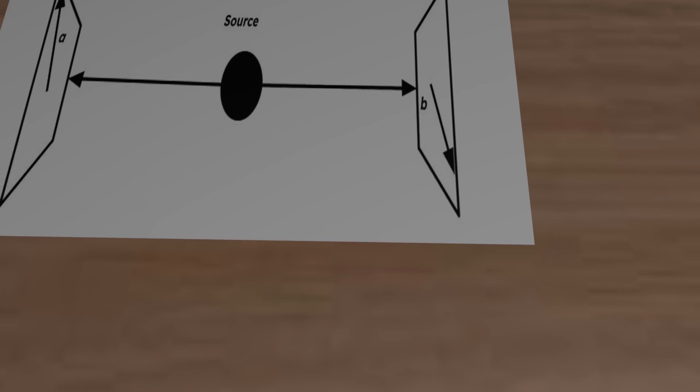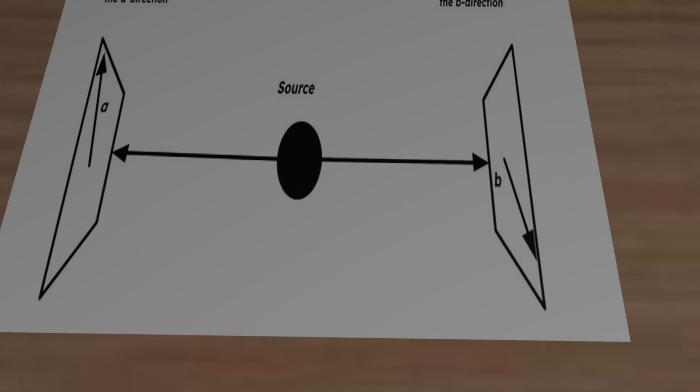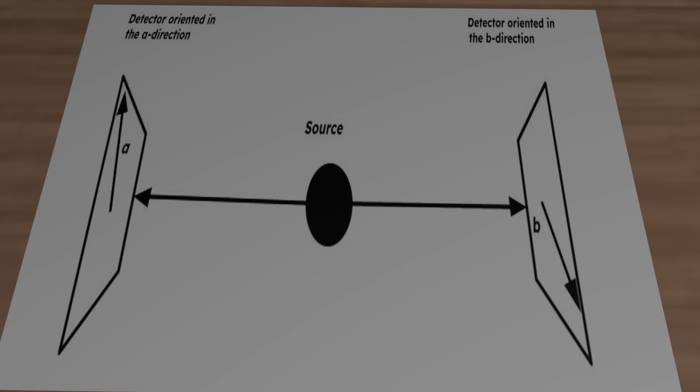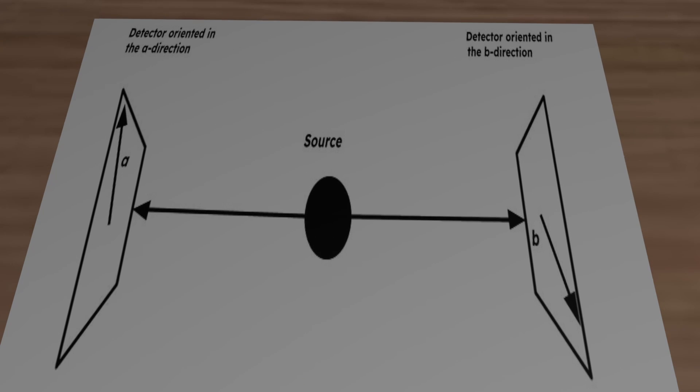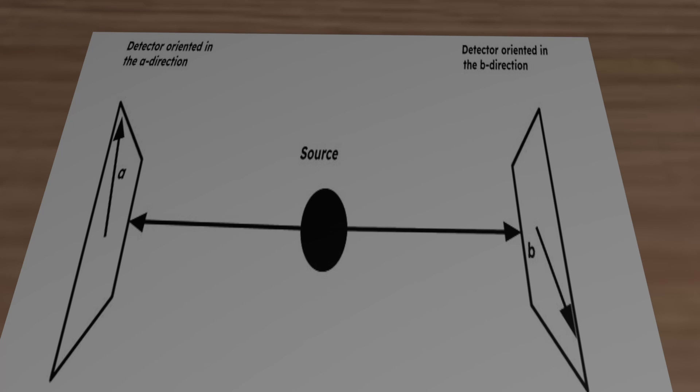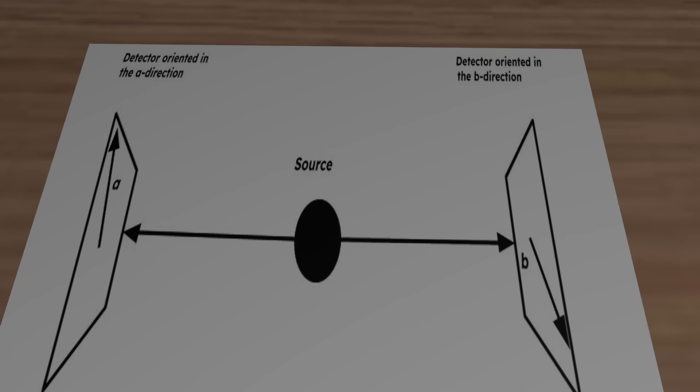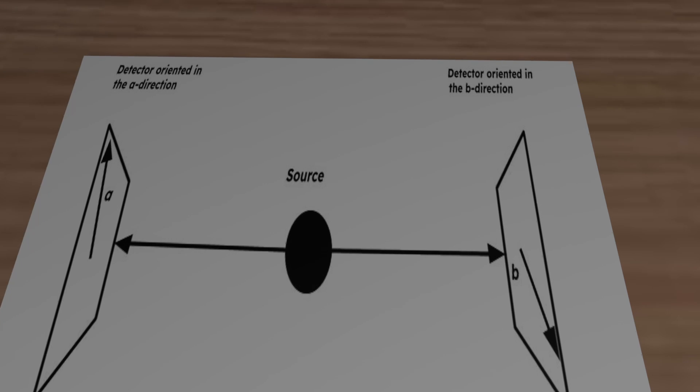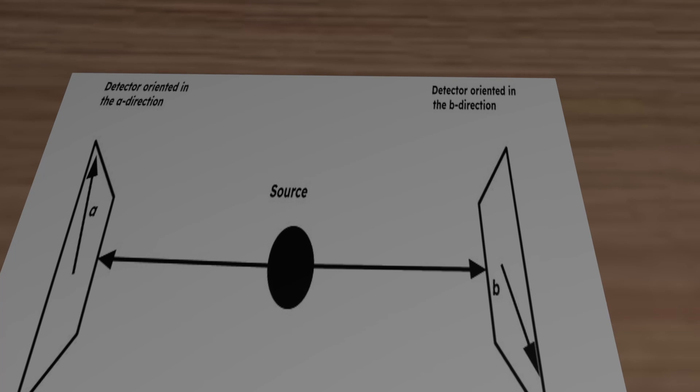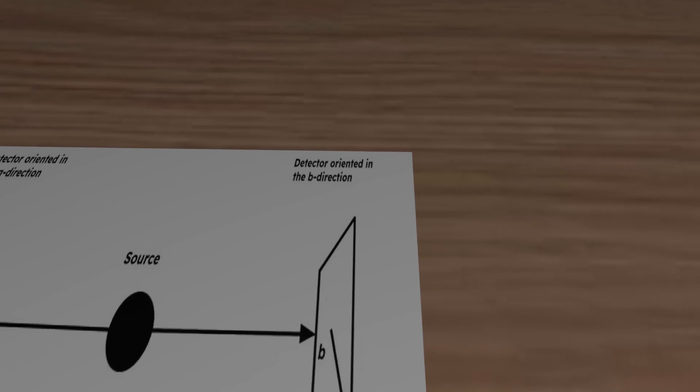Imagine that two entangled particles are emitted from a source in opposite directions. Now imagine two Stern-Gerlach devices oriented in directions A and B to measure the spin of each particle. Their measurements will either report a spin down, represented by minus one, or a spin up, represented by plus one.